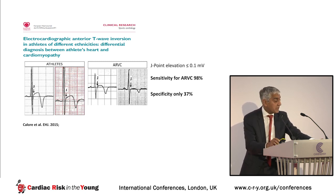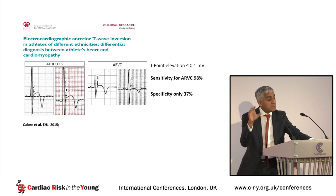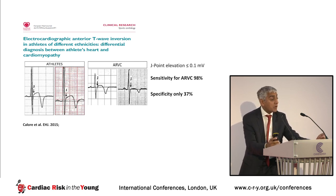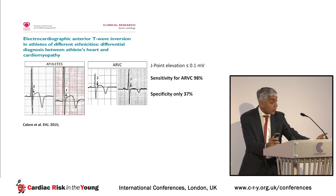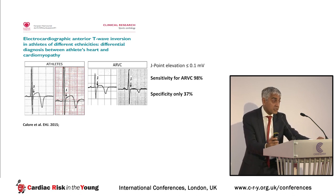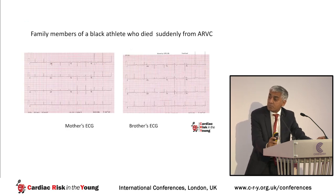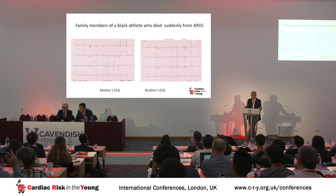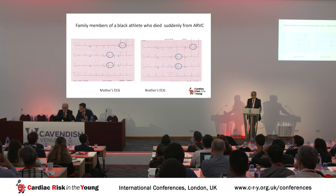This data came from athletes who had disease processes, and 70% of athletes in this cohort were black, which may explain why the J-point elevation pattern appears so prominent. If a black athlete has T wave inversion without J-point elevation, there should be greater concern. ECGs from the mother and brother of a black athlete who died suddenly from ARVC demonstrate T wave inversion without preceding J-point elevation, and both were gene-positive for ARVC.